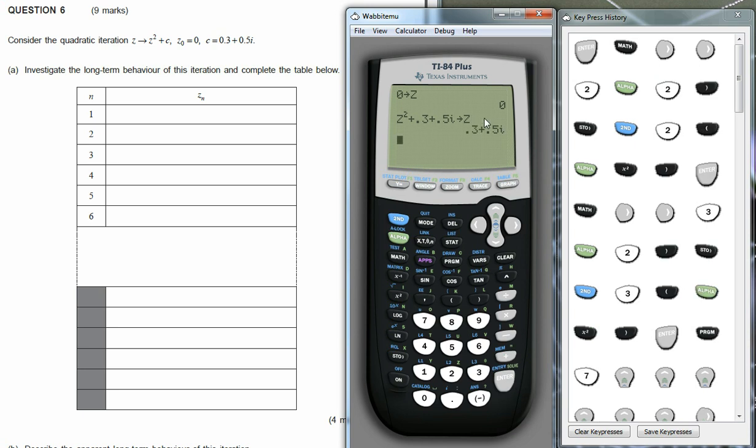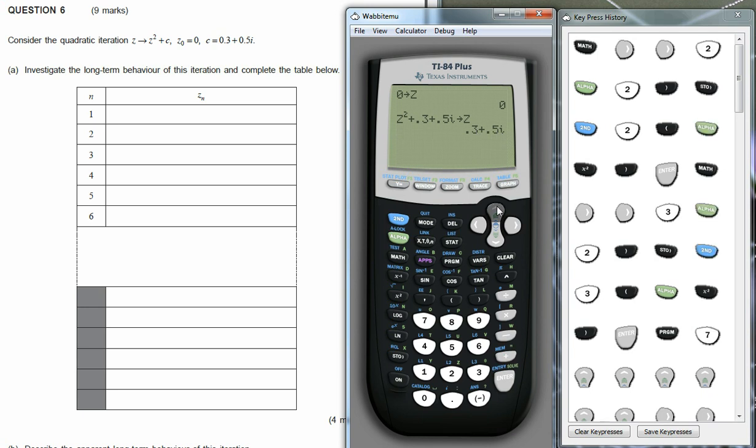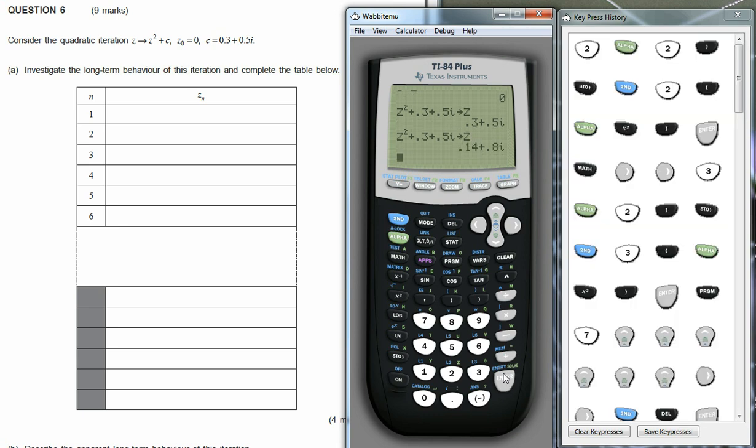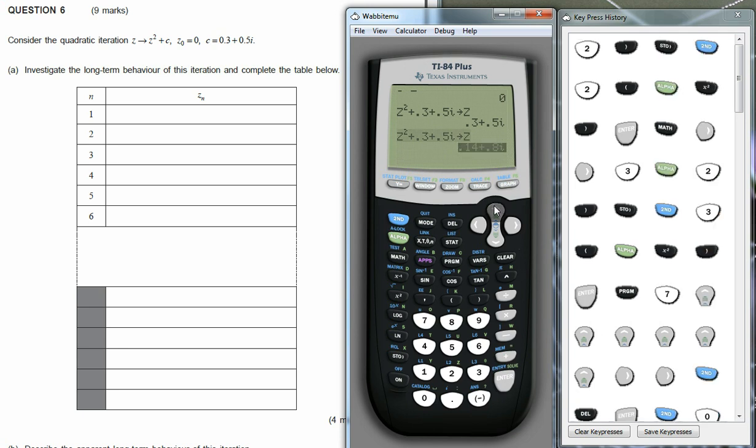There we go. And the very first value, the value for z1 will be 0.3 plus 0.5i. Now I could go back over there, repeat that step. So the second value, which we'd write into there would be 0.14 plus 0.8i, continuing on.